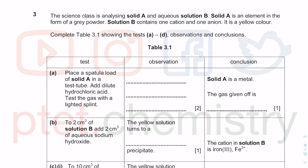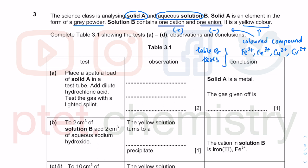In these next questions we have solid A and aqueous solution B. A is an element in the form of a gray powder. Solution B contains one cation, meaning positive ions, and one anion, meaning negative ions. It is yellow color. Colored compounds usually contain transition elements, specifically ions that might be Fe2+, Fe3+, Cu2+, or Cr3+. These will give you color precipitate when you add sodium hydroxide or ammonia.